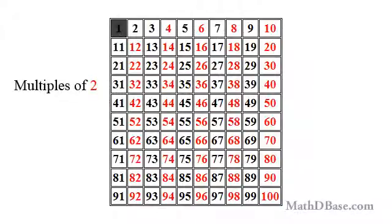To see how his method works, I will demonstrate with a list of whole numbers from 1 to 100, but the process will work with a list of any size. Starting at 2, color every second or even number in red — 4, 6, 8, 10, etc., to 100. These numbers are all multiples of 2.